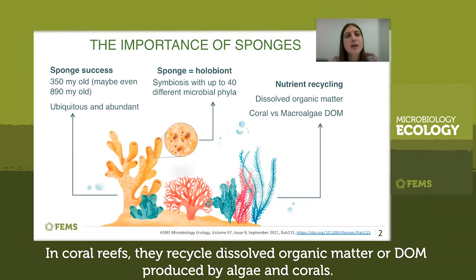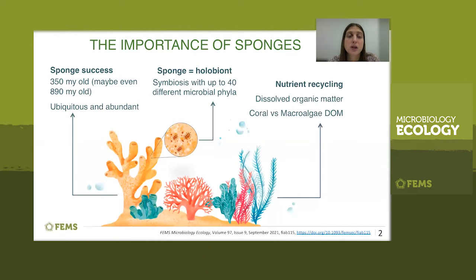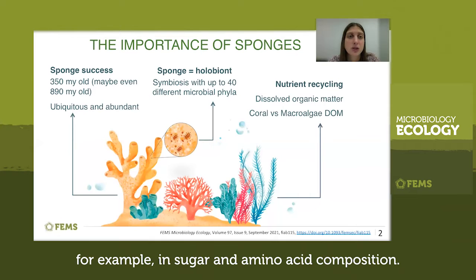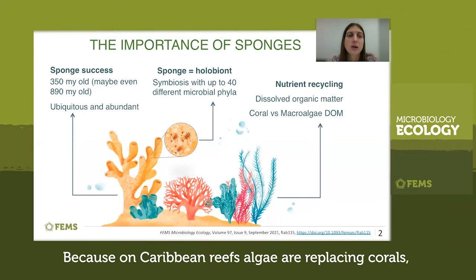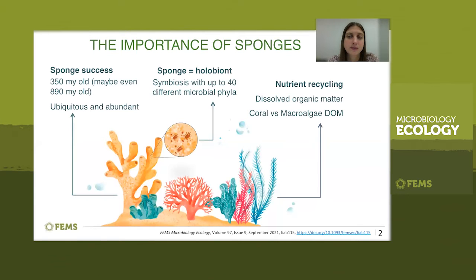In coral reefs, sponges recycle the dissolved organic matter, or DOM, produced by algae and corals. But we don't know if algal DOM is a different fuel than coral DOM for sponges, for example in sugar and amino acid composition. Because on Caribbean reefs algae are replacing corals, we wanted to know if this shift also affects the sponges' associated bacterial communities.